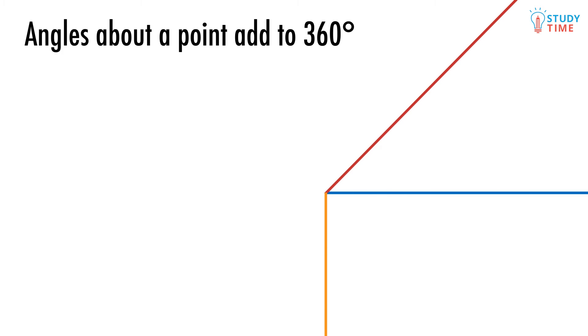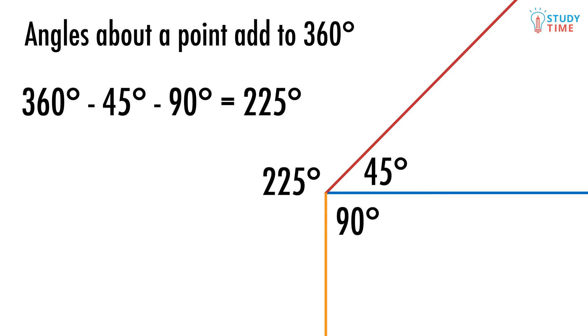We can use this knowledge of degrees to work out angles around a point. They all need to add up to 360 degrees. Say these three lines meet at this point. If you know the angle between two of them, you can work out the angle of the last segment. If the first angle is 45 degrees, and the second angle is a 90 degree right angle, then the third angle must be 225 degrees.